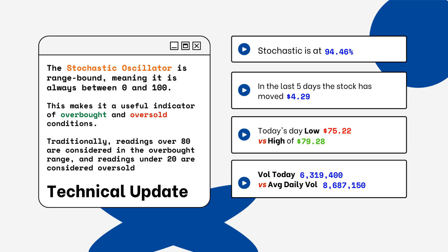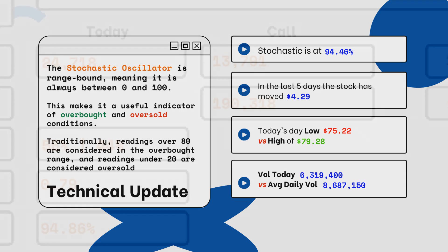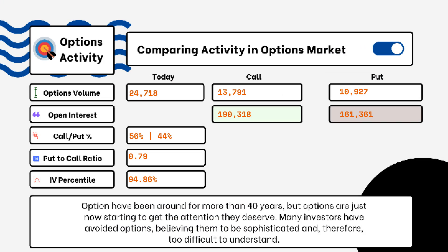We've also provided today's volume of shares traded and the average daily volume. You want to see how much volume is being traded and whether it is above or below the average daily volume level. This tells you how relevant the move is from the stock today.